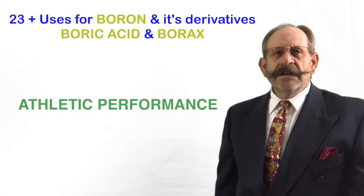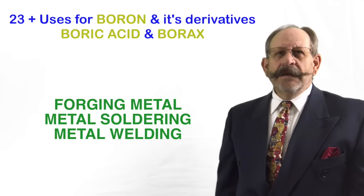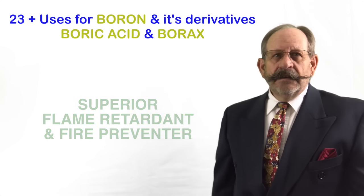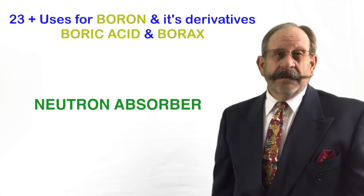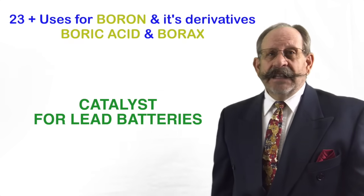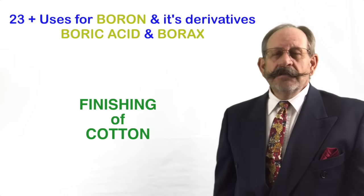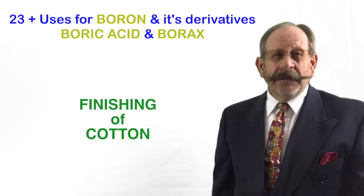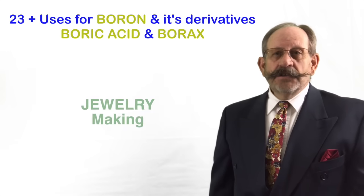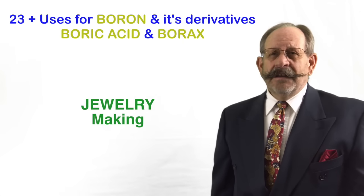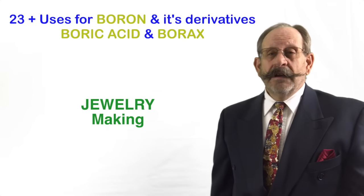Thirteen: menstrual cramps. Fourteen: athletic performance. Fifteen: laundry brightener. Sixteen: forging metal and metal soldering and welding. Seventeen: it's a flame retardant. Eighteen: it's a neuron absorber used in nuclear power plants. Nineteen: it's a catalyst in lead battery functions. Twenty: treatment of chronic wounds. Twenty-one: it's used in the finishing of cotton fibers. Twenty-two: it's a crucial element in cobalt electroplating. Twenty-three: jewelry metalworking. And this list goes on — you can't believe how many uses boron has in the world today.